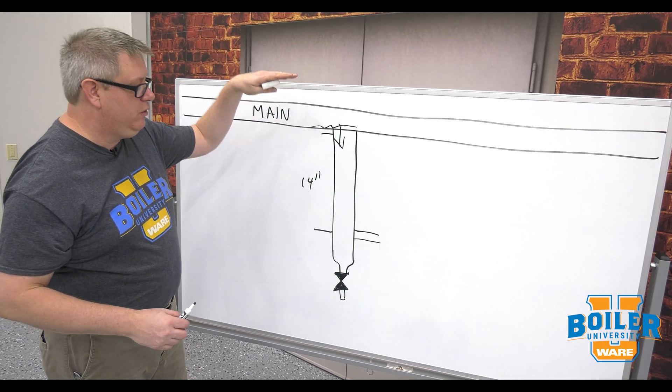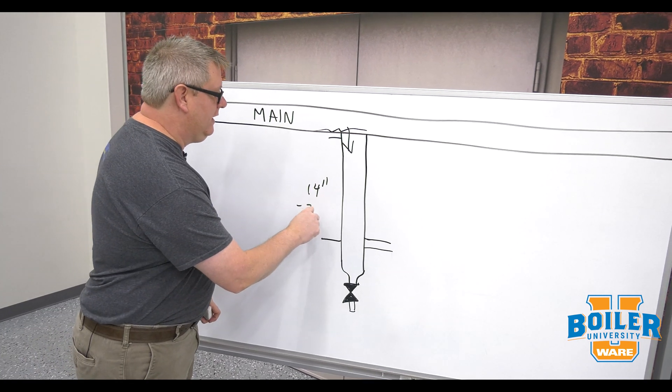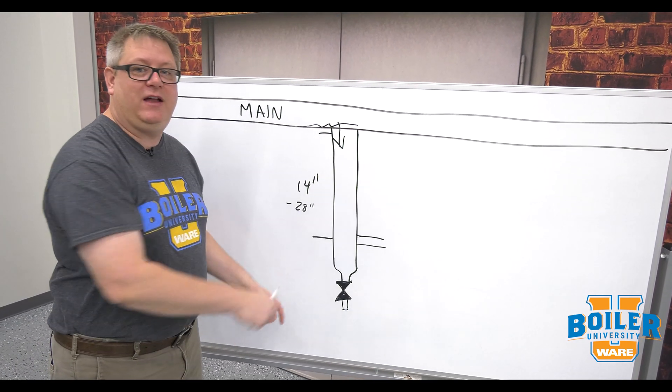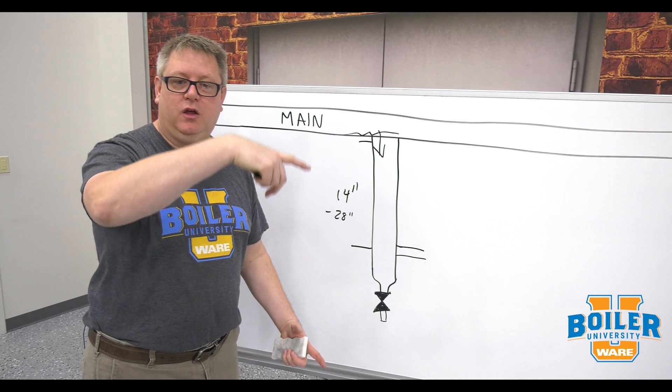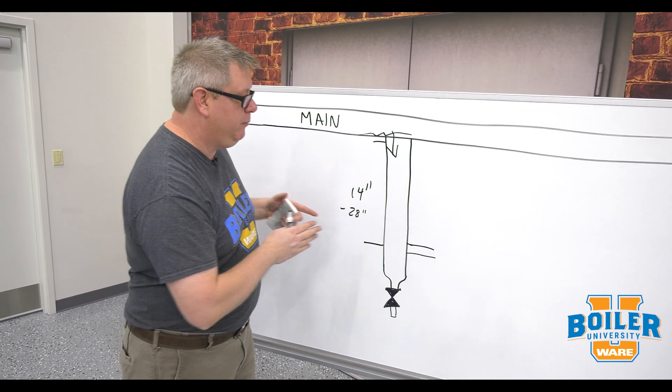In an automatic system where we want to do it all without any operator intervention we'll use a 28 inch drip leg and that just gives us additional volume to accumulate condensate until we get the system pressure to push it through our trap.